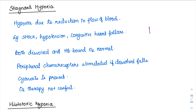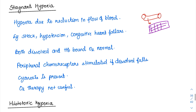Now stagnant hypoxia. Here, blood flow to the tissue is very slow — the blood is stagnated. The same blood keeps being used; for example, if blood contains 20 mL of oxygen, the tissue keeps extracting from that same pool. Stagnant hypoxia is caused by reduced blood flow due to shock, hypotension, congestive heart failure, or circulatory failure. Both dissolved and hemoglobin-bound oxygen are normal because the lungs are functioning properly.